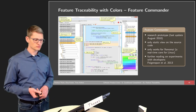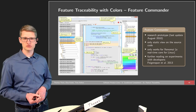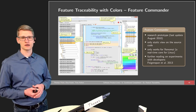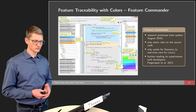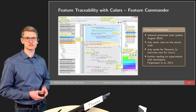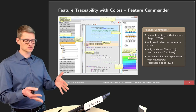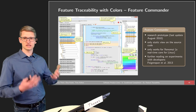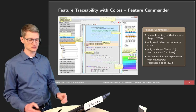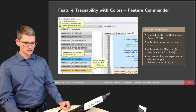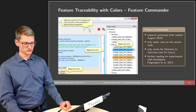Feature Commander is a research prototype that hasn't been maintained in recent years. It only provides a static view on the source code and only works for a particular real-time core for Linux — Xenomai. The tool support was built to run experiments with developers to understand how these colors actually affect development and maintenance tasks in a product line.